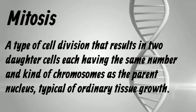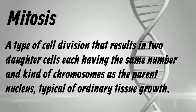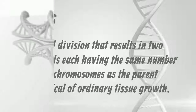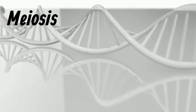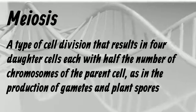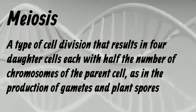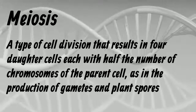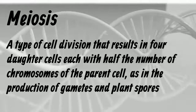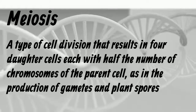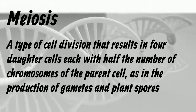The next type of cell division is meiosis. This type of cell division results in four daughter cells, each with half the number of chromosomes of the parent cell. This is common in the production of gametes and plant spores.